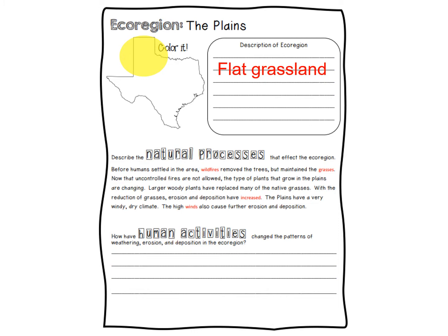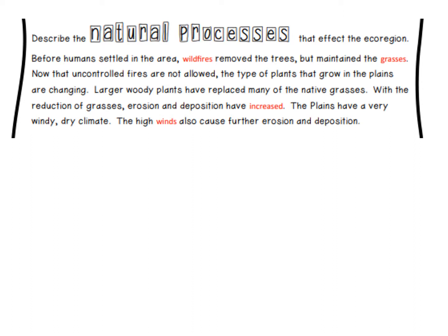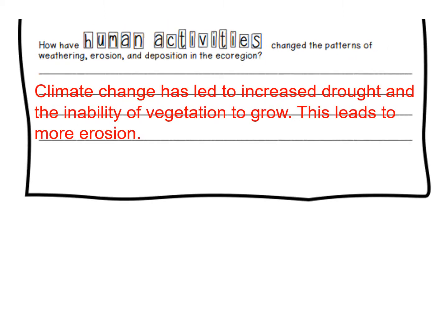The plains is going to be mostly grasslands. But over time we have suppressed fire — we don't let it burn — which has led to the growth of more brush and trees, and that can change how things weather and erode there. Climate change has been a problem here because it's warmer and there's more drought, making it difficult to grow plants. This is where we grow a lot of our crops in Texas.